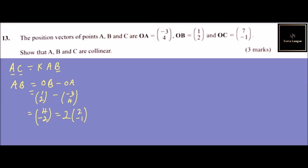Now, the same case applies, let's find out AC. AC equals OC minus OA. We have OC is 7, minus 1, and then we have minus OA is minus 3 and 4. So 7 minus minus 3 will be 7 plus 3, that gives us 10. Minus 1 minus 4 is minus 5, which can be written, we factor out 5, and we have 2 and minus 1.